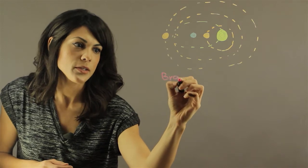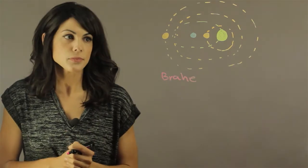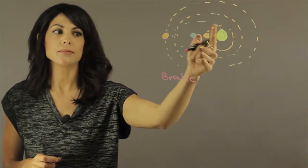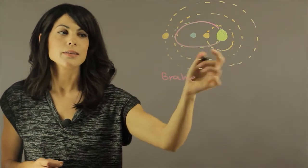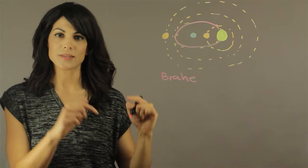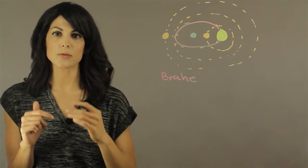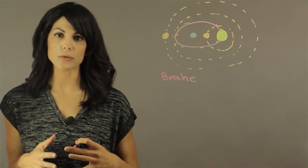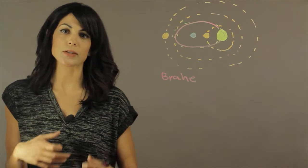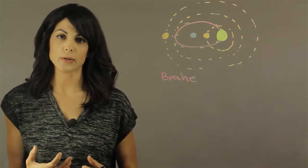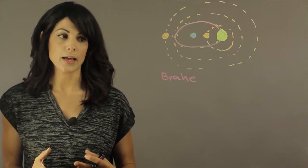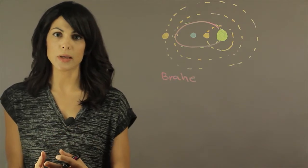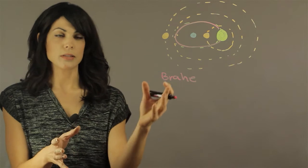We had Brahe, who believed in a very strange model. He believed that the Sun orbited the Earth, but that the other planets orbit the Sun. He was quite confused with the data he was getting and could not explain a lot of the observations he collected. He spent many years collecting data to prove this but never really got too far with it. That's because his thesis was wrong.